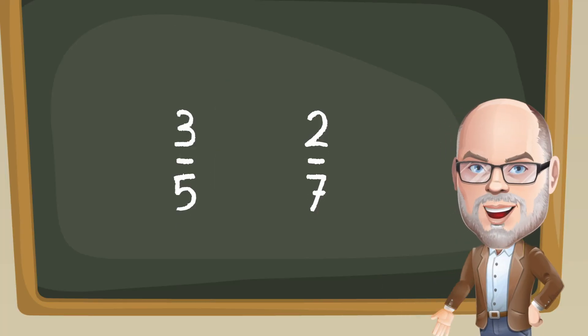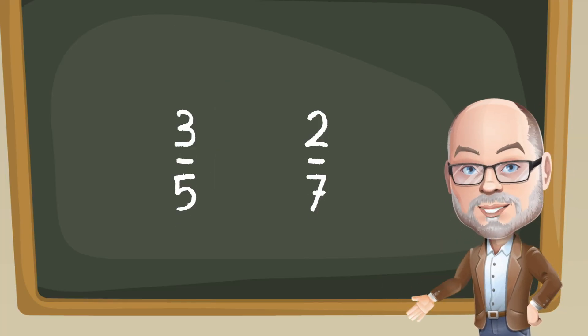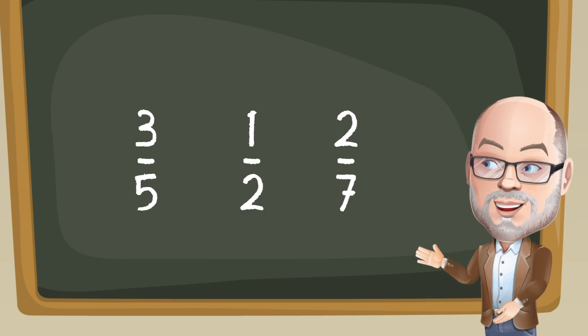Let's talk about comparing fractions using benchmark relationships. Consider 3 fifths and 2 sevenths. Which of these two fractions is greater? You can think about how these two fractions relate to one-half. 3 fifths is greater than one-half.